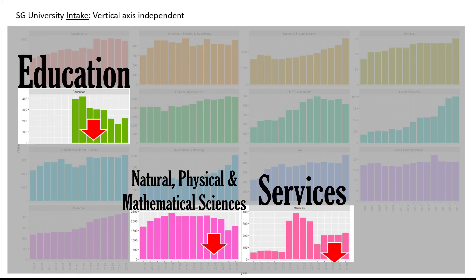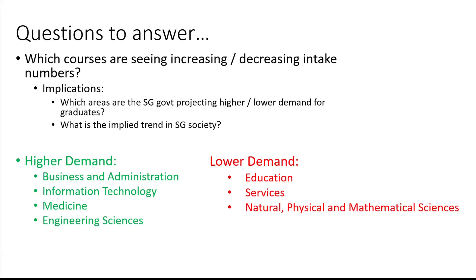What's really interesting to me is natural, physical, and mathematical sciences. Because when we talk about AI and data science, there's a lot of mathematics and statistics behind it — so it's strange that this number is actually decreasing. To summarize the implied trends in Singapore society: medicine and health sciences reflect an aging population; information technology reflects the move toward AI and data science; business administration reflects Singapore's ambition as a hub. On the lower demand side, education reflects declining birth numbers, and services remain uncertain with COVID-19.